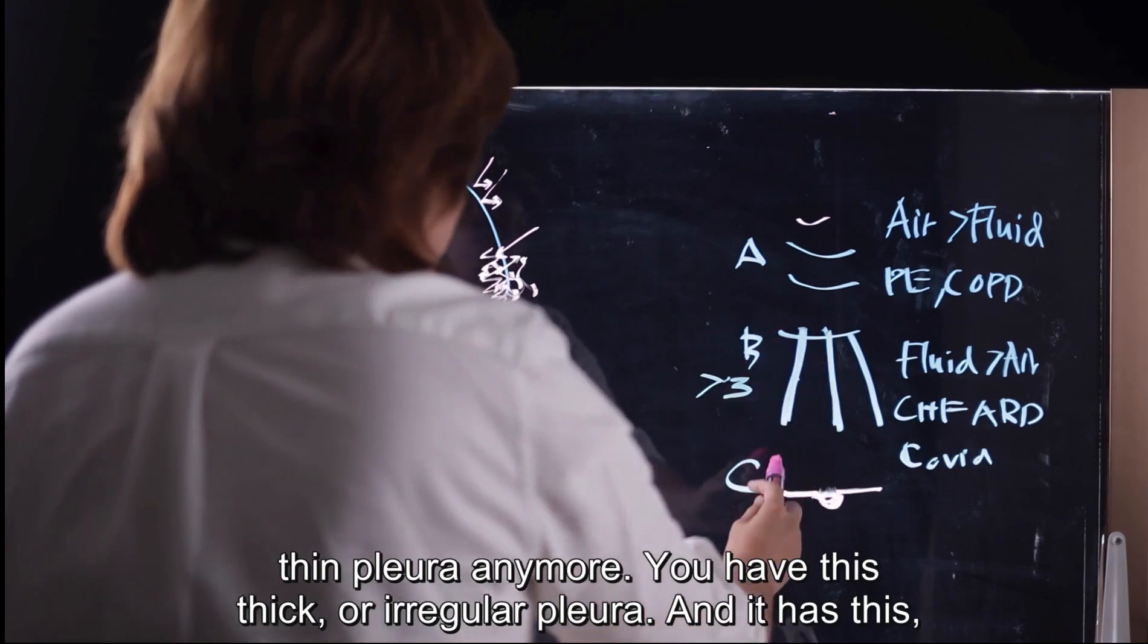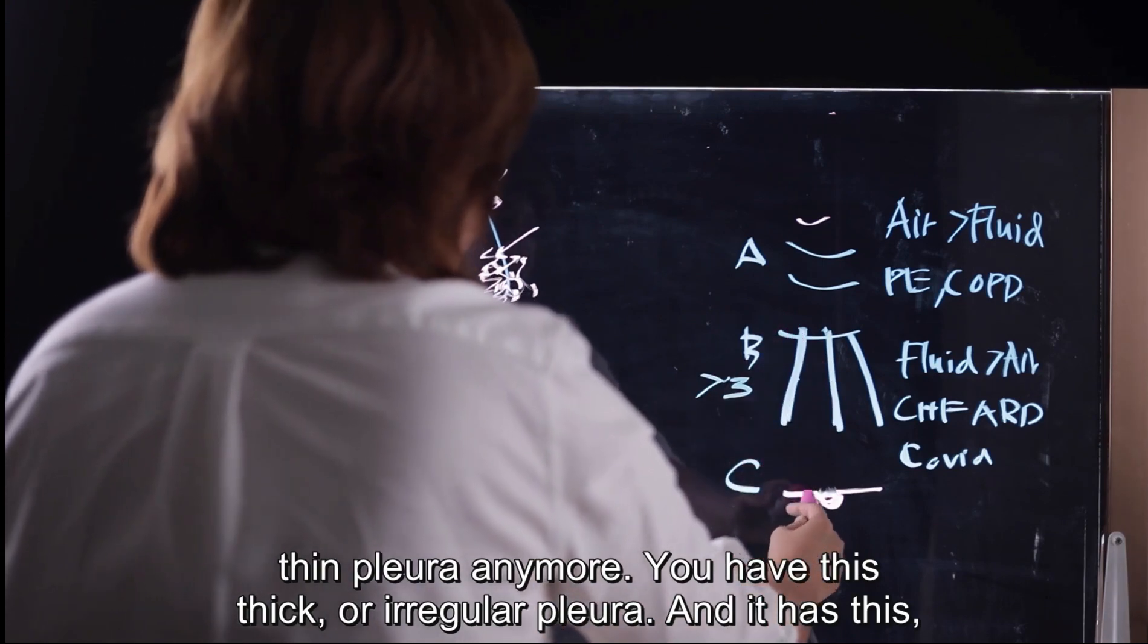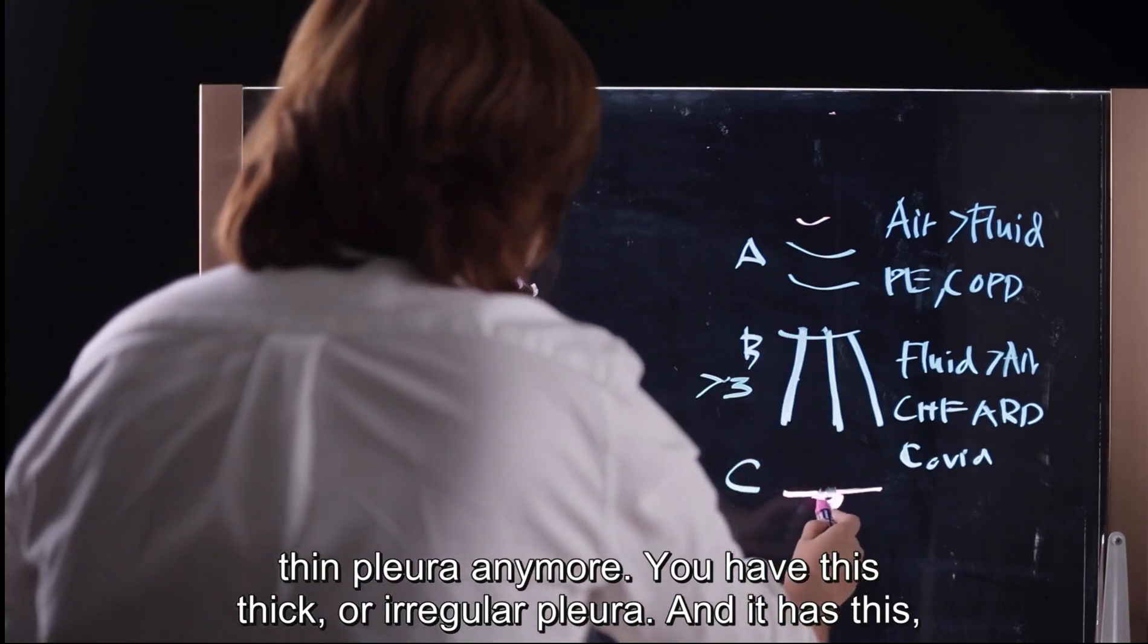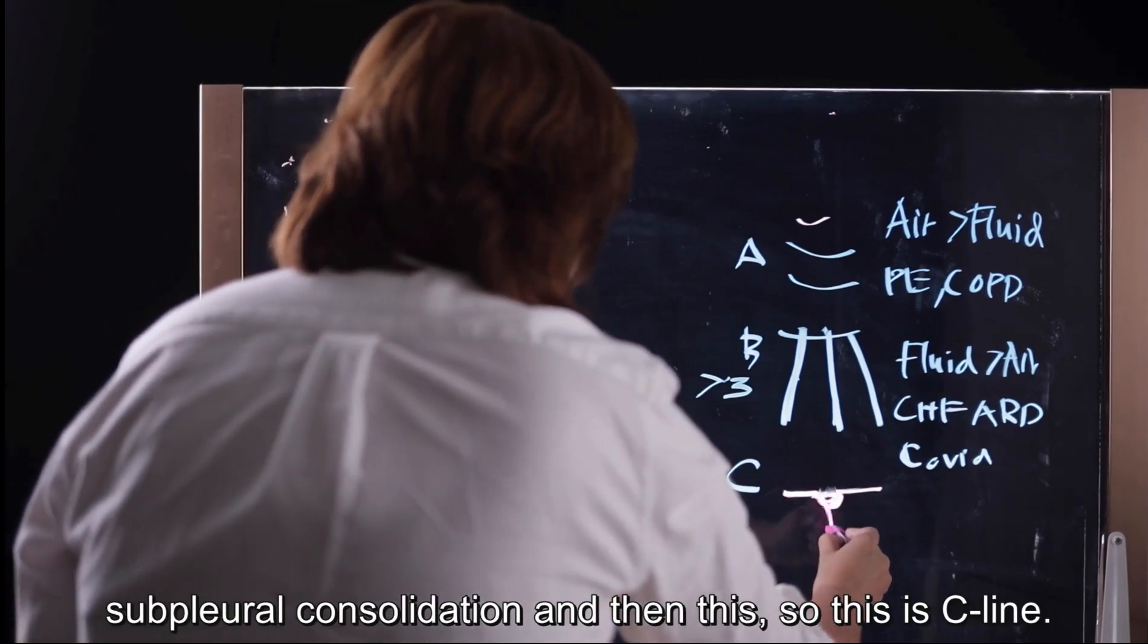So you have bacteria that destroy your pleural line. So you don't have a nice, clean, thin pleural line anymore. You have this thick pleural line or irregular pleural line, and it has this sub-pleural line consolidation.